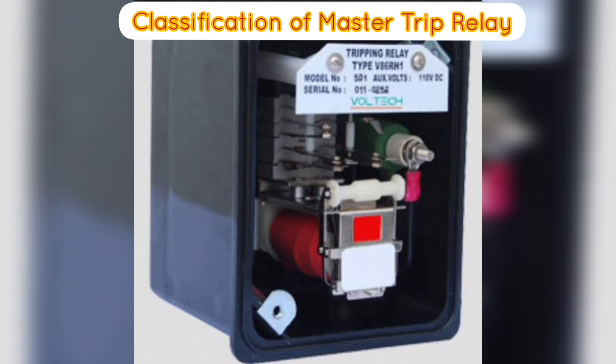Low Level Trip, ANSI Code 86L: These relays are used for tripping an auxiliary circuit breaker. The relay does not trip the entire power network if the fault level is low, and it outputs the signal for annunciation purposes.